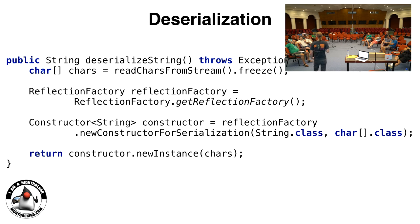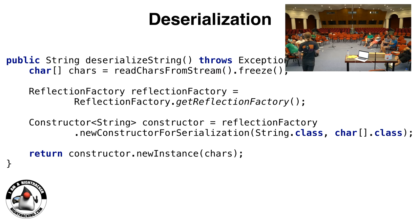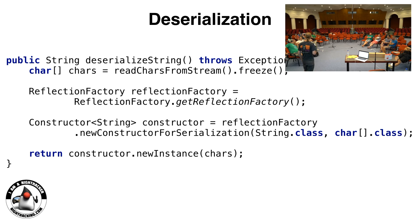I don't think this is a problem specific to Java serialization — this is a general problem, and any kind of serialization will have this problem. I know there is serialization 2.0. I'm not actually aware of the state — I think Brian is working on that. There was some discussion about serialization 2.0 and it kind of stalled out, so it's most probably not going to happen.